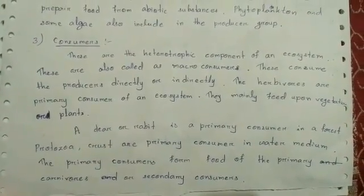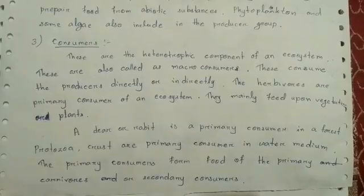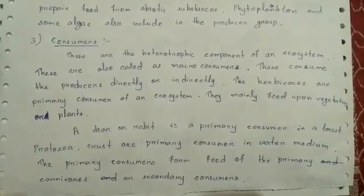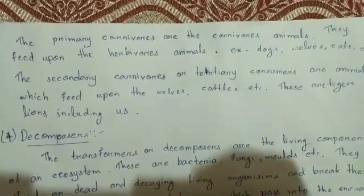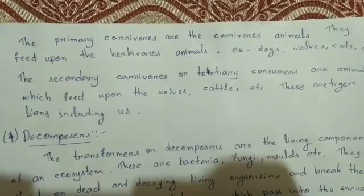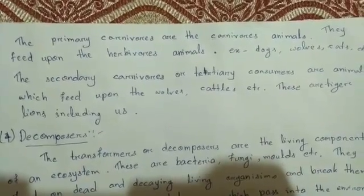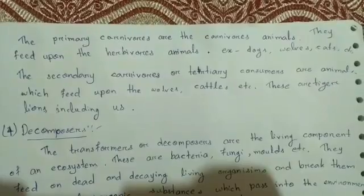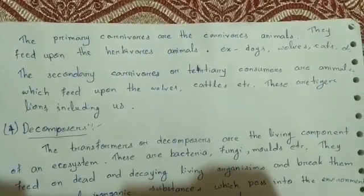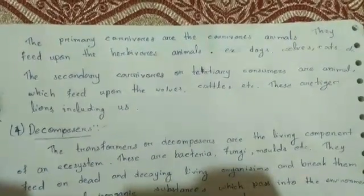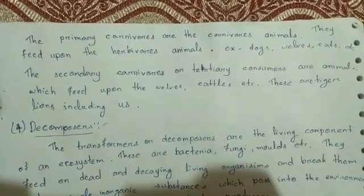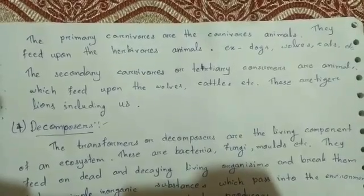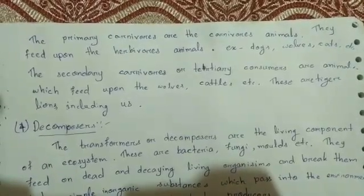Primary consumers form the food of the primary carnivores, also known as secondary consumers. Primary carnivores are carnivorous animals that feed upon herbivorous animals — for example, dogs, cats, and similar animals. The secondary carnivores, or tertiary consumers, are animals which feed upon primary carnivores. These include tigers, lions, and humans.